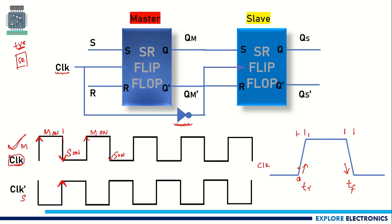Up to 10 percent of the voltage increase we treat it as logic 0, and similarly when it comes back to 0, from that point onwards we treat it as 0. When it rises up to 90 percent of the voltage we treat it as logic 1. So we say the positive level of the clock is this duration where master is on. When the clock is low, slave is on; from that point onwards slave becomes off and master becomes on again.